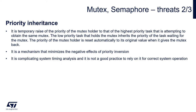How does priority inheritance work? It temporarily raises the priority of the mutex holder to that of the highest priority task that is attempting to obtain the same mutex. The low priority task that holds the mutex inherits the priority of the task waiting for the mutex. The priority of the mutex holder is reset automatically to its original value when it gives the mutex back. We should remember that this complicates system timing analysis, and it is not good practice to rely on it for correct system operation. It is better to set priority levels wisely and monitor OS_Status_t return values on all attempts to access resources like queues, semaphores, or mutexes.